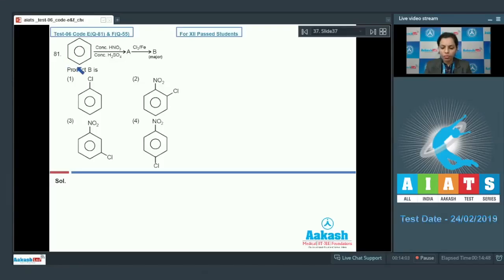Question number 81. You have this benzene ring. Nitration of this is done. Ultimately a product you will obtain and it is treated with chlorine in the presence of catalyst iron. There is the formation of the major product B. You need to just identify product B.